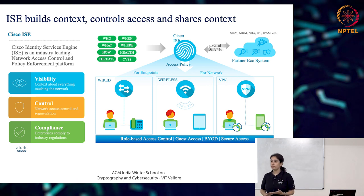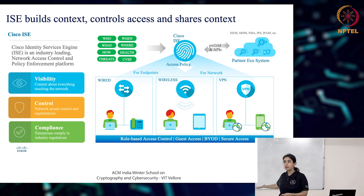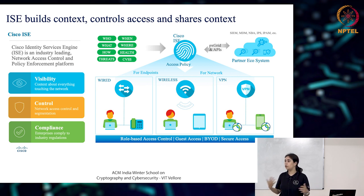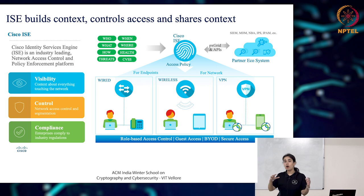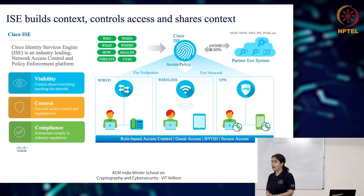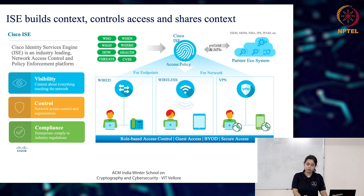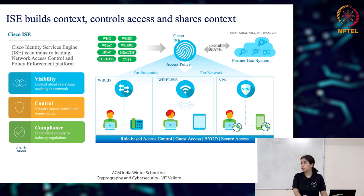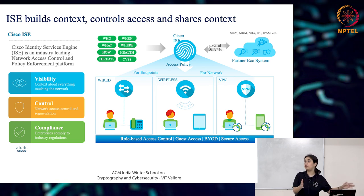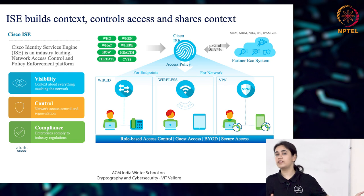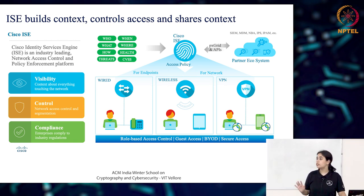That is one aspect of ISE. The other aspect is it will act as a AAA server — it will help you authenticate your users, authorize your users, and log all activity, so you have historical logs of what is happening in your network. So three things: it gives you visibility, it gives you control so you can do network segmentation, specifying how a particular location of your offices should operate.